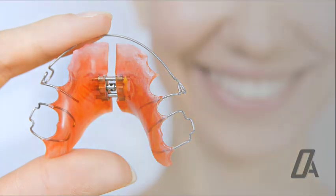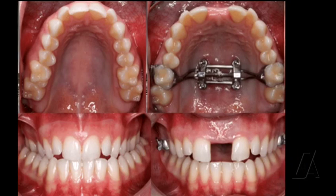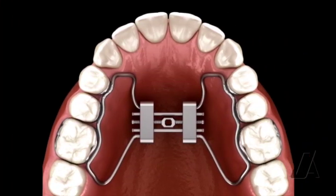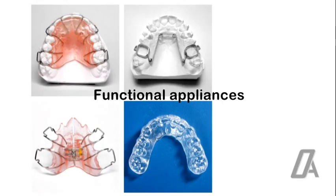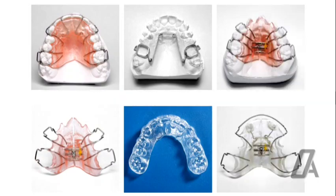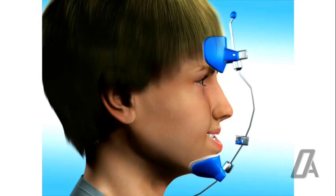Then we have palatal expanders, another tool in the orthodontic arsenal. These devices are used to widen the upper jaw or maxilla, creating more space for teeth to align properly. Expanders can be especially beneficial in children, as their maxilla is still growing and more susceptible to changes. But it doesn't stop there. Orthodontics also employs functional appliances, which are devices designed to alter the jaw's position, promoting more favorable growth. These appliances can help to correct issues like a receding or protruding jaw, which ties back to the maxilla's growth and alignment.